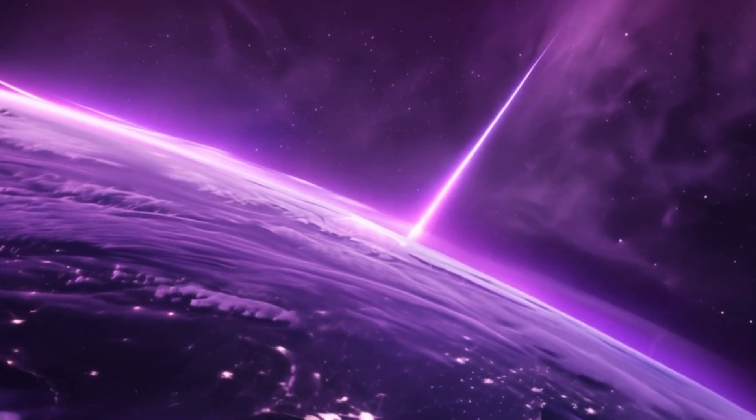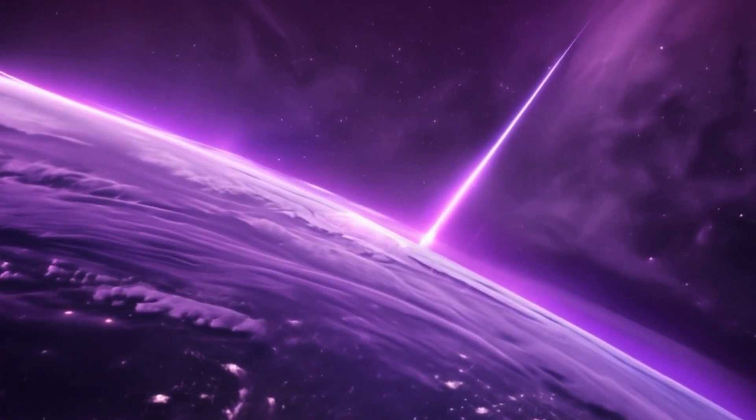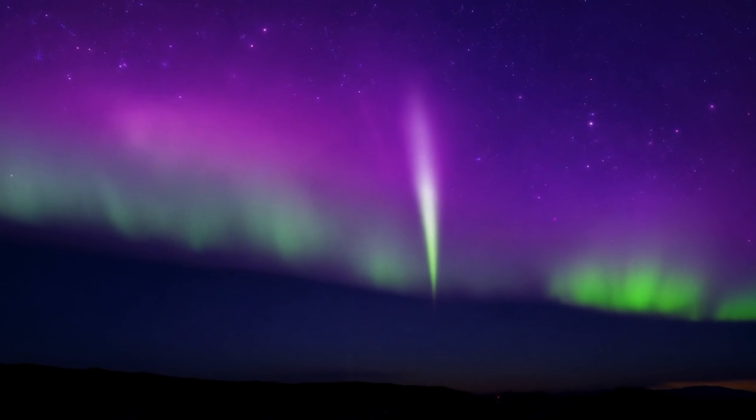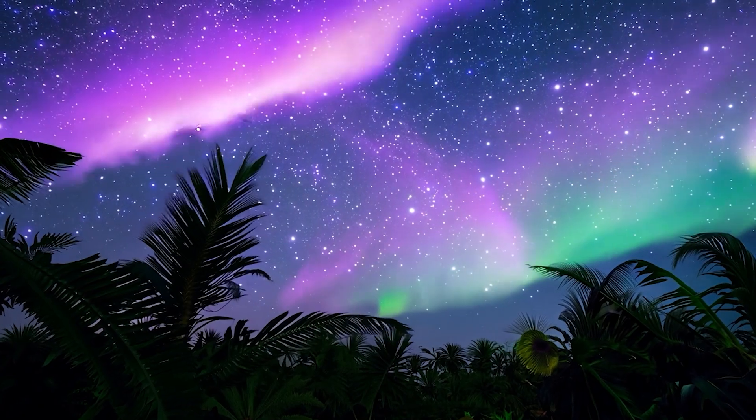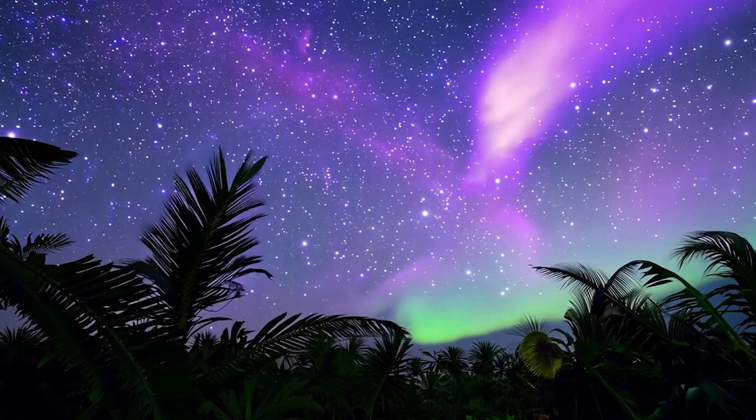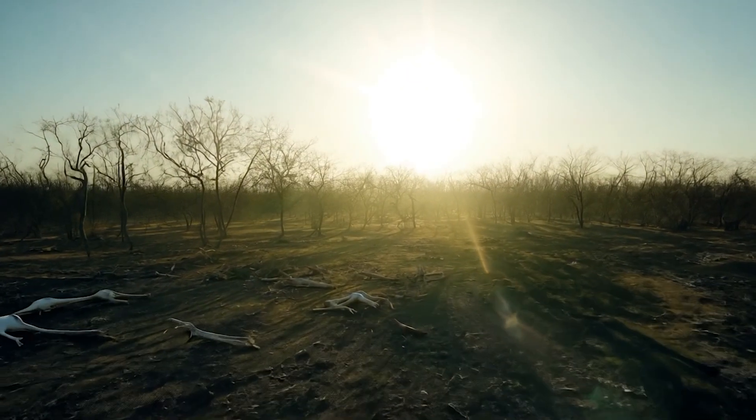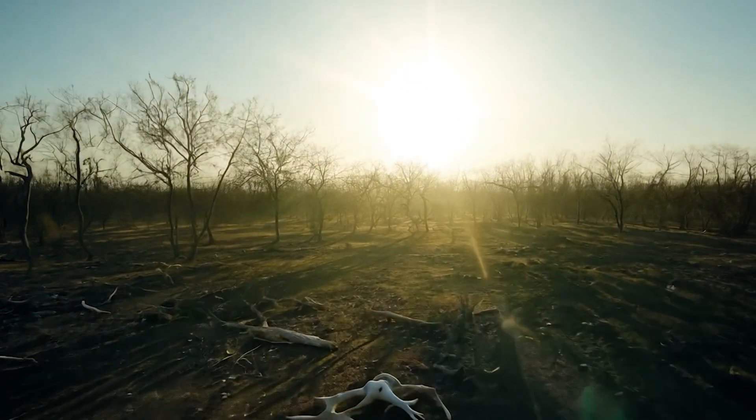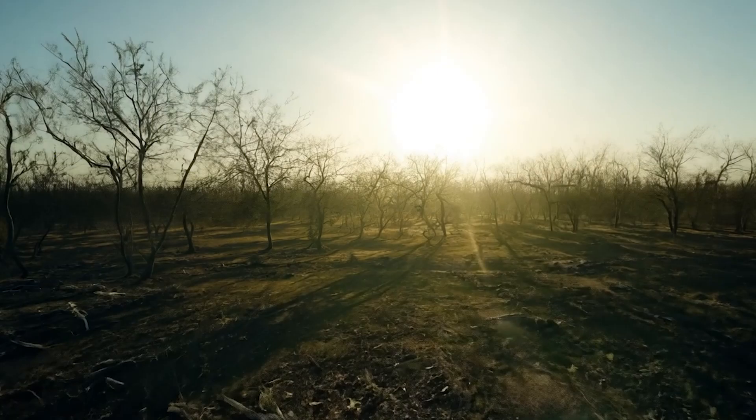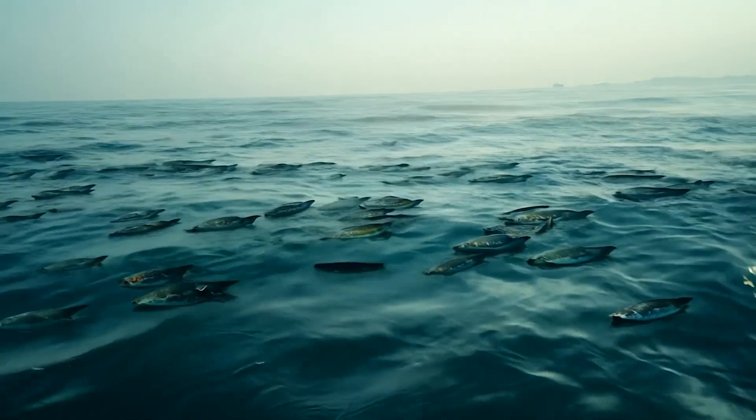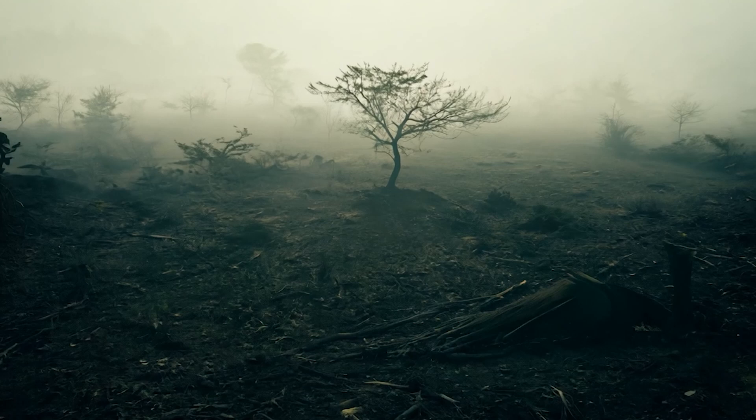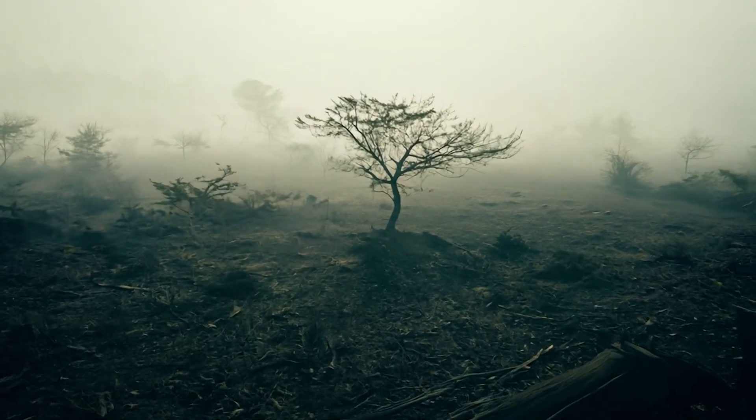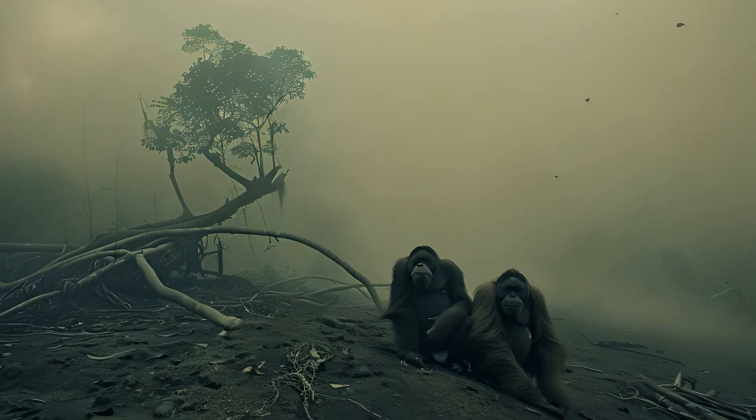The intense radiation could have depleted our planet's ozone layer, exposing life to deadly ultraviolet light from the sun and disrupting delicate ecosystems. Such an event could lead to widespread extinction, particularly affecting photosynthetic organisms like phytoplankton, which form the foundation of many food chains. The loss of these crucial species would have cascading effects on Earth's biodiversity.